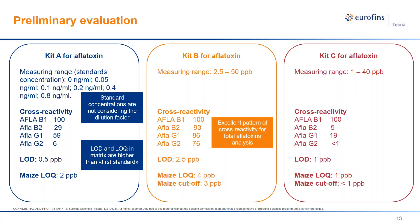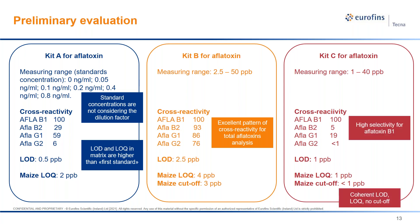Comparing the cross-reactivity patterns: Kit B, which seemed worst in terms of sensitivity looking only at the measuring range, is capable of consistently detecting all four regulated aflatoxins with cross-reactivity higher than 75%, making it the first choice for analyzing total aflatoxins. On the contrary, Kit C shows very little interference from aflatoxin B2, G1 and G2, making it a better tool for aflatoxin B1 specific analysis.